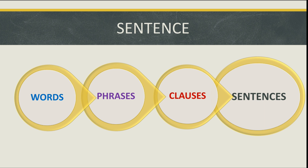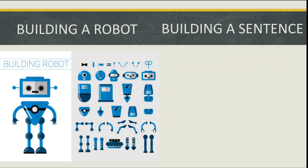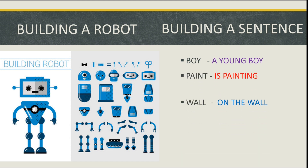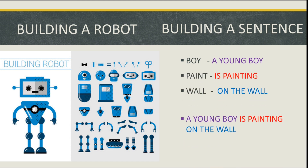To understand this in detail, let's use a robot analogy. Normally a robot cannot be built in a day — it needs many parts like a head, eyes, hands, and legs. When all the parts are assembled and fixed together, the robot is complete. In the same way, to frame a sentence we need words, and two or three words combined together eventually build a sentence. For example, the words boy, paint, and wall.